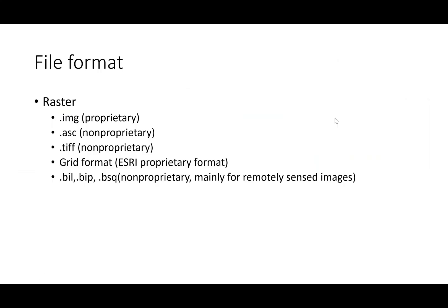Raster datasets come in different file formats. IMG is a proprietary format — short for image — since any picture made of pixels is a raster dataset. ASC stands for ASCII format, which is non-proprietary and can be used in any GIS application.